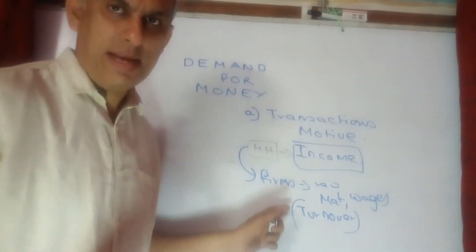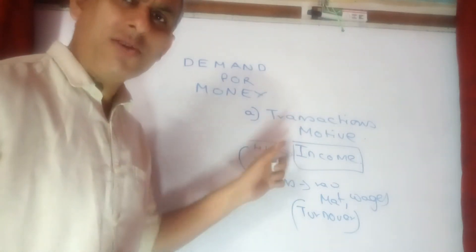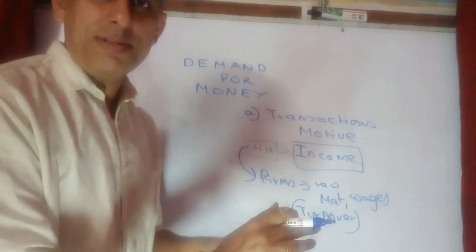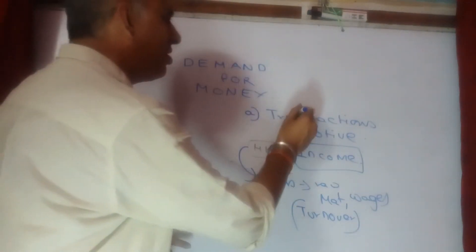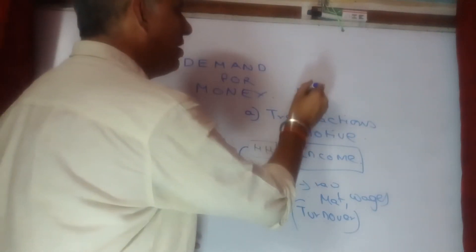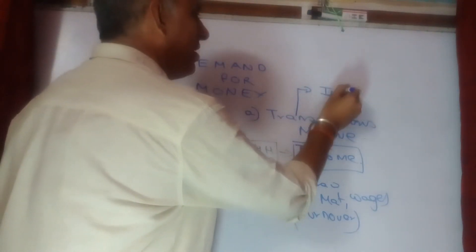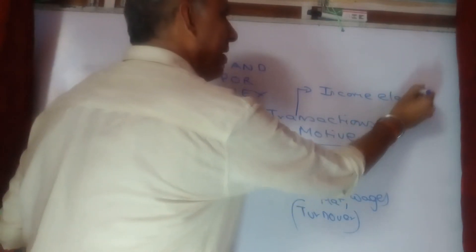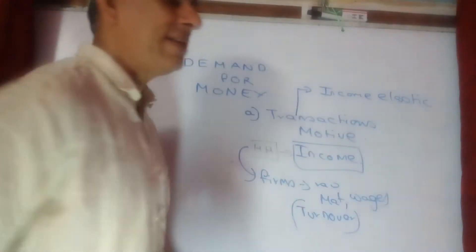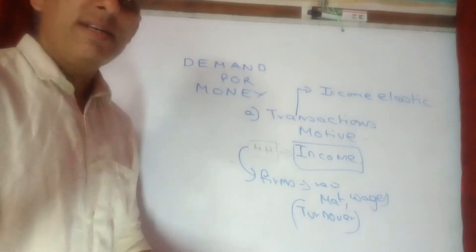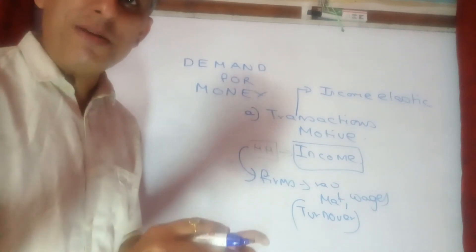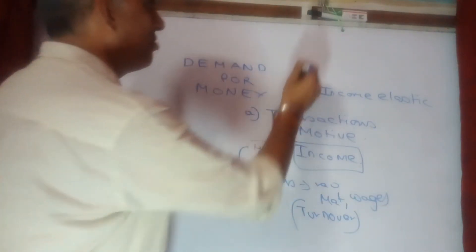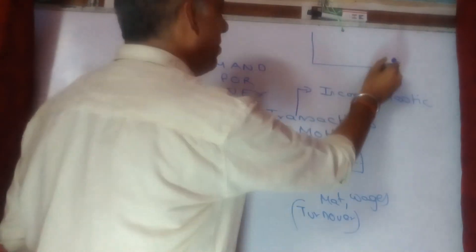So both groups of people — households and firms — depend upon their incomes. That's why transaction motive is considered to be income elastic. When I say income elastic, it means the demand for money for this purpose depends very heavily upon income. If I have to present this in a diagrammatic form...